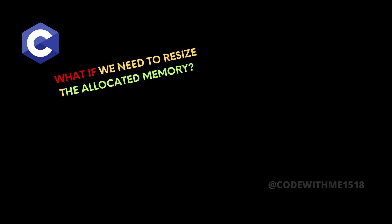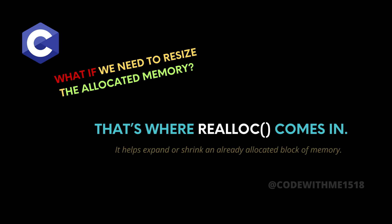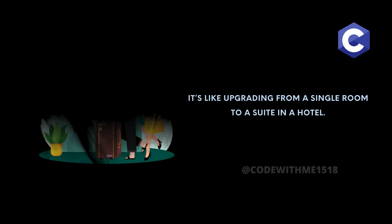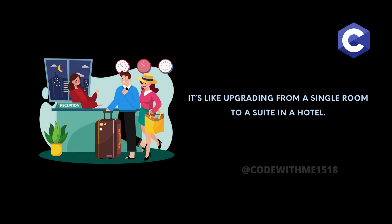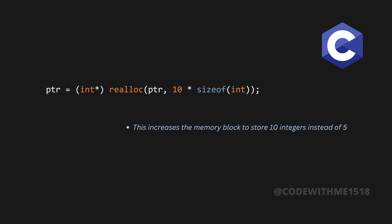Now, what if we need to resize the allocated memory? That's where realloc comes in. It helps expand or shrink an already allocated block of memory. It's like upgrading from a single room to a suite in a hotel. For example: ptr = realloc(ptr, 10 * sizeof(int)). This increases the memory block to store 10 integers instead of 5.